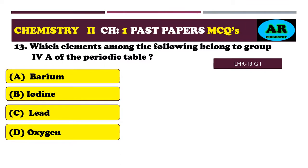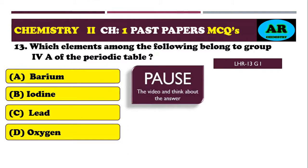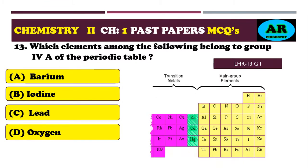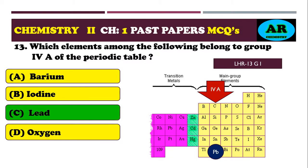MCQ 13: which element belongs to group 4A of the periodic table? Option alpha: barium, option beta: iodine, option charlie: lead, option delta: oxygen. The correct option is charlie — lead. Group 4A is the carbon family: carbon, silicon, germanium, tin, and lead. So lead belongs to group 4A.